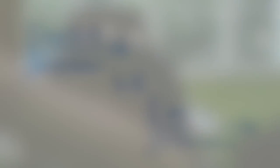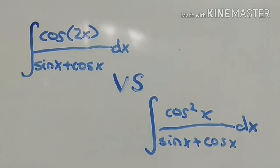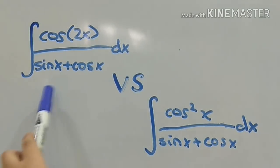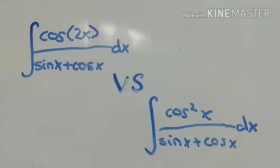Right here, right now! The first integral is the integral of cosine of 2x over the sine of x plus cosine of x, versus the integral of cosine squared of x over the sine of x plus cosine of x dx. This second one is actually simpler, so I'm going to do it first. Alright, let's do this integral battle now!